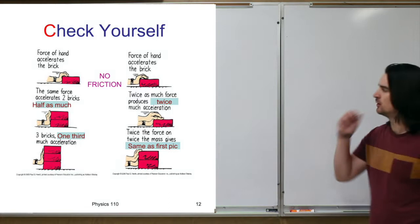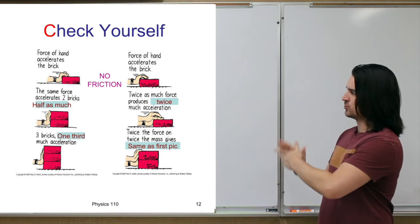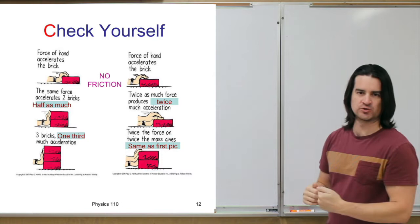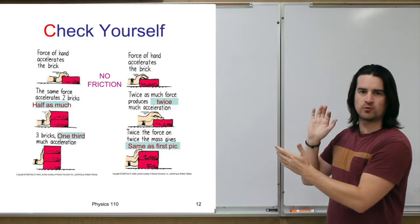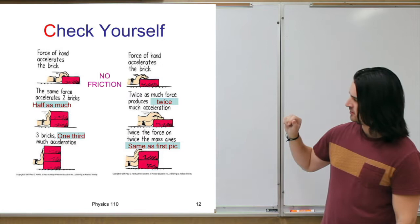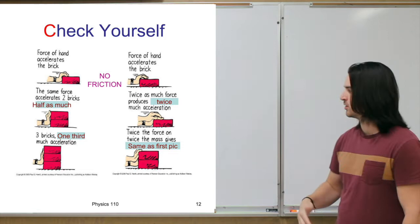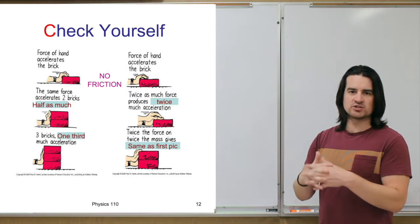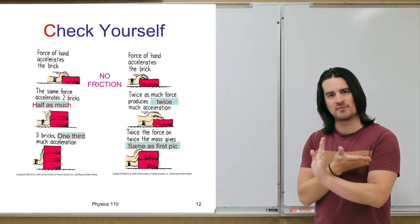Going through the answers: apply the same force to twice the mass — acceleration is inversely proportional to mass, so double the mass gives half the acceleration. Apply twice the force to the same mass — acceleration is proportional to force, so twice the force gives twice the acceleration. Three times the mass gives one third the acceleration. Finally, if you double both the mass and the force, those effects cancel each other out and you get the same acceleration as the baseline.